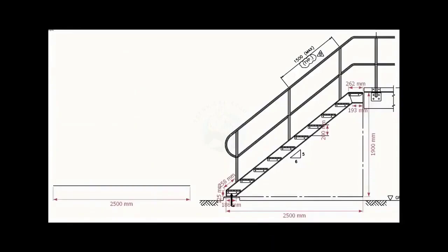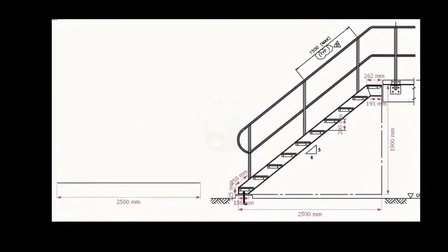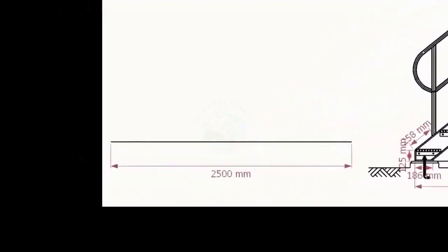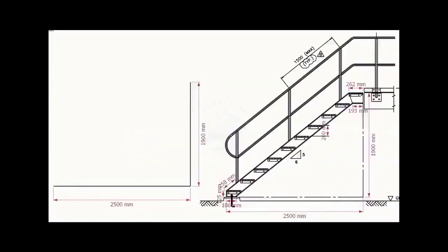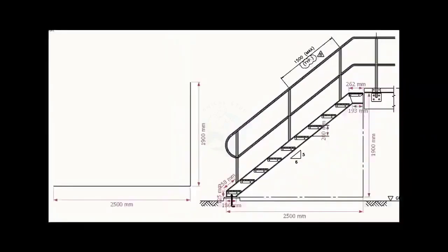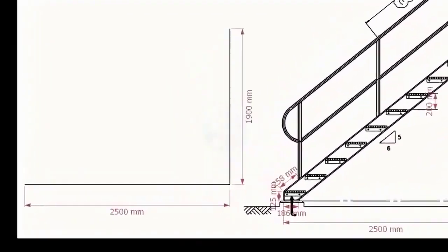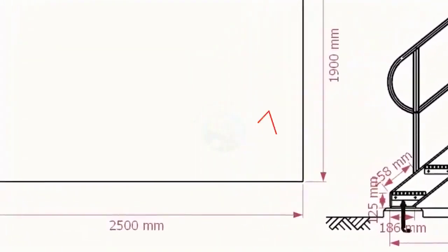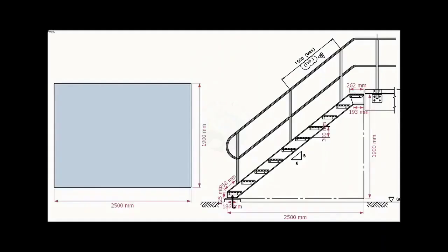Let us start a layout on a leveled plate or platform. Draw the bottom length 2500 millimeters. Draw the width 1900 millimeters. Make sure the included angle is 90 degrees. Let us complete the rectangle.